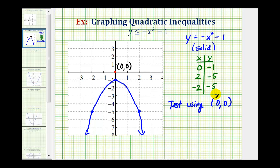So we'll substitute zero for x and zero for y into the original inequality. So we would have zero is less than or equal to negative zero squared minus one. This is zero is less than or equal to negative one. And this is false because on the number line, zero is to the right of negative one. So zero is greater than negative one.